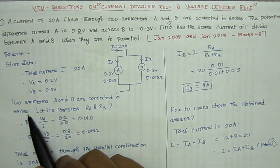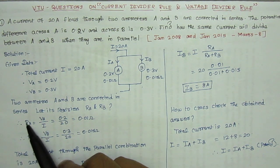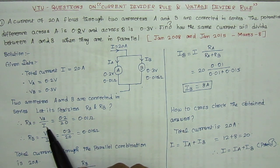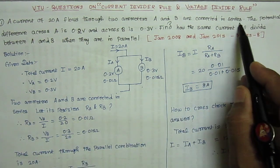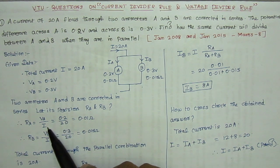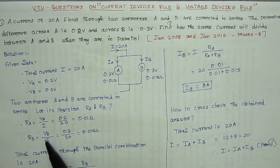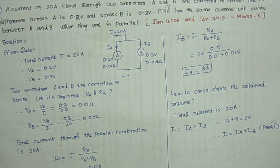First, ammeters A and B are connected in series. Whenever connected in series, the current remains constant, so we find the resistance of each ammeter using R = V/I. R_A = V_A / I = 0.2 / 20 = 0.01 ohms. R_B = V_B / I = 0.3 / 20 = 0.015 ohms. So we have obtained the resistance values for ammeter A and ammeter B.